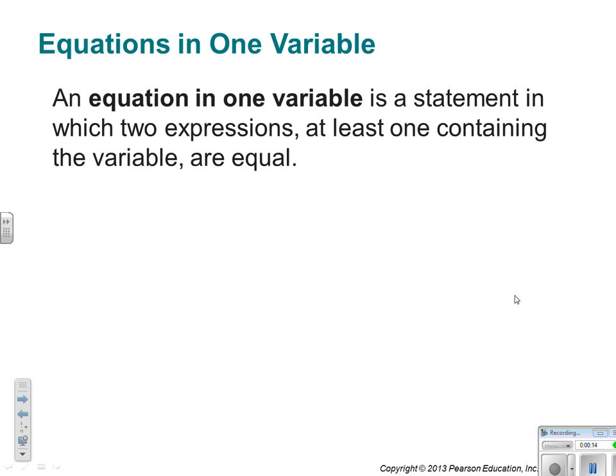So, an equation in one variable is a statement in which two expressions, a right side and a left side, at least one containing a variable, are equal. So, equal sign in the middle, something on the right, something on the left. Don't get thrown off by crazy math terminology.